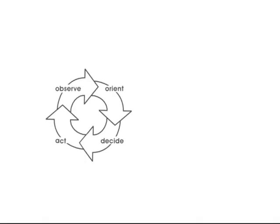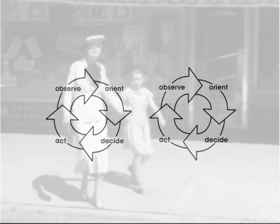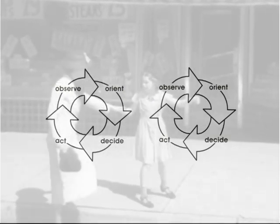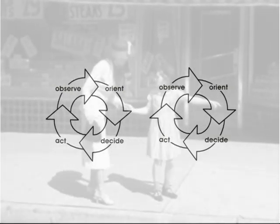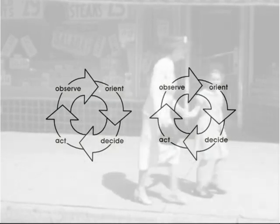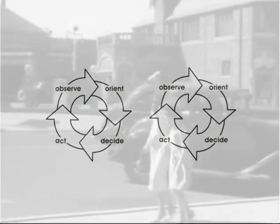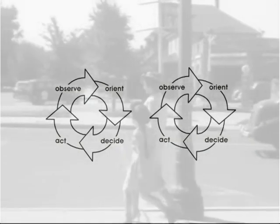Of course, you picked up that wasn't a single OODA Loop — that was two OODA Loops working together. Mother and daughter were able to observe, orient, reach a decision, and act in order to achieve their common task. It's a simple example of teamwork.